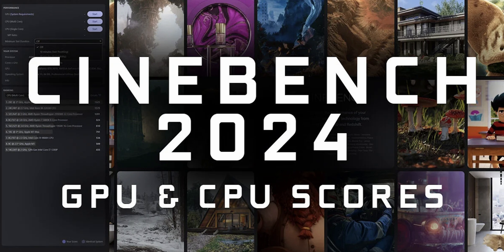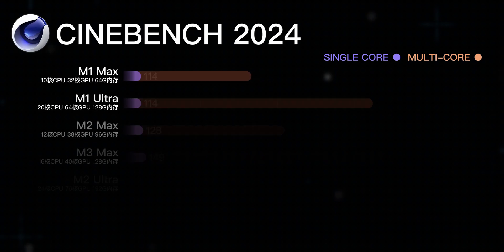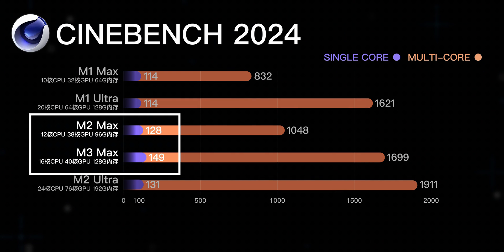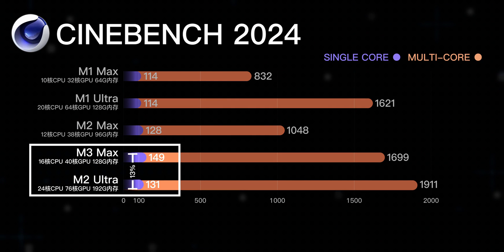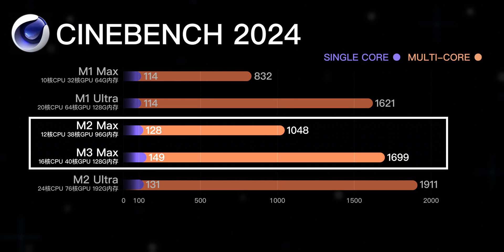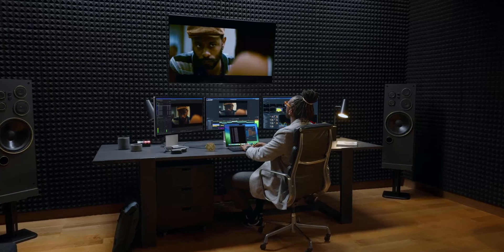Next, let's briefly cover the benchmark scores. For Cinebench 2024 — chosen because it stresses full CPU performance close to real-world limits — the M3 Max single-core score surpasses M1 Ultra by a large margin. Compared to the previous M2 Max, single-core improved by 16%, also surpassing M2 Ultra's single-core score. Multi-core has caught up with M1 Ultra — meaning M1 Ultra can essentially be retired. Compared to M2 Max, multi-core improved by 62%, which should be the largest Max-to-Max upgrade ever.